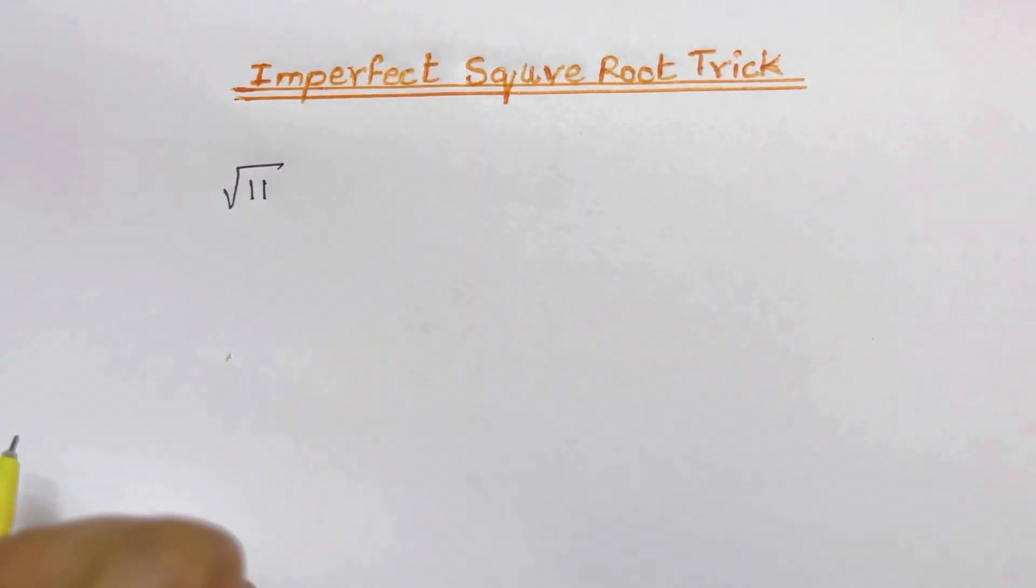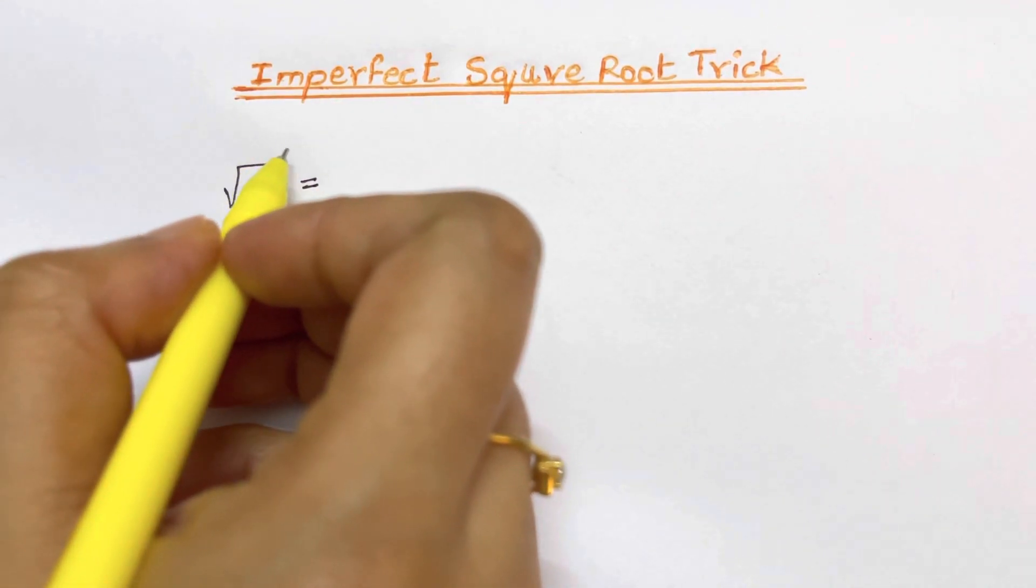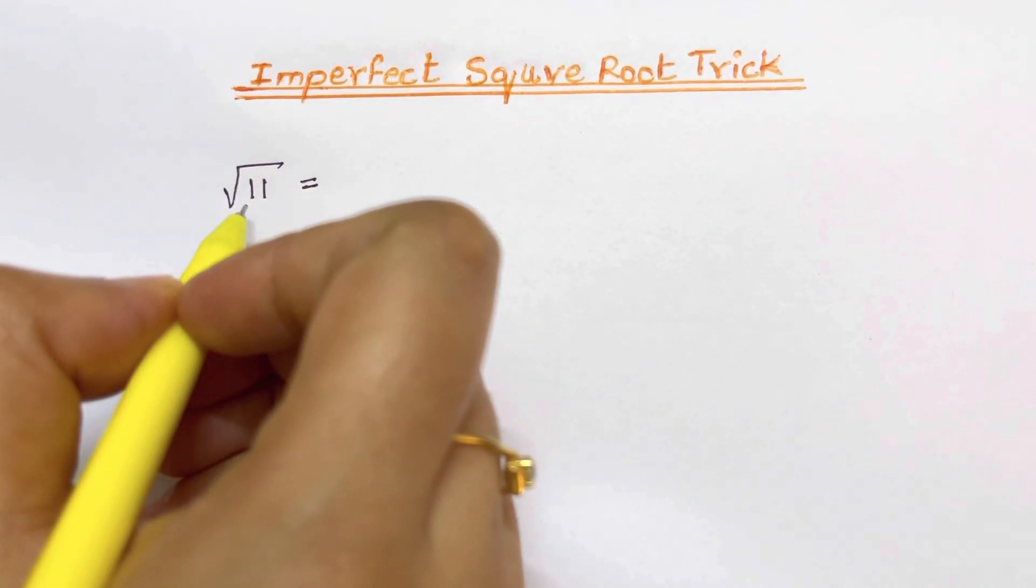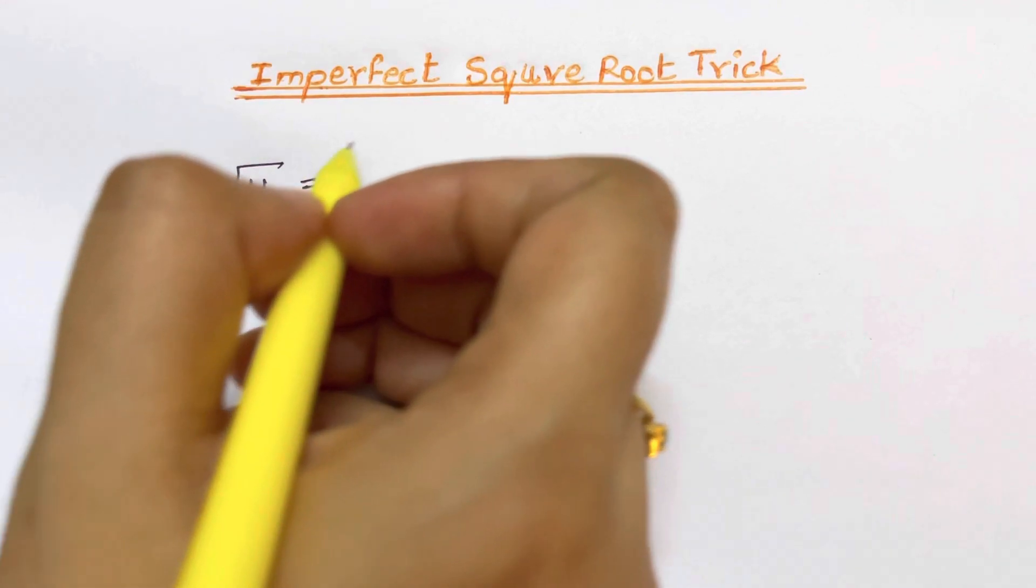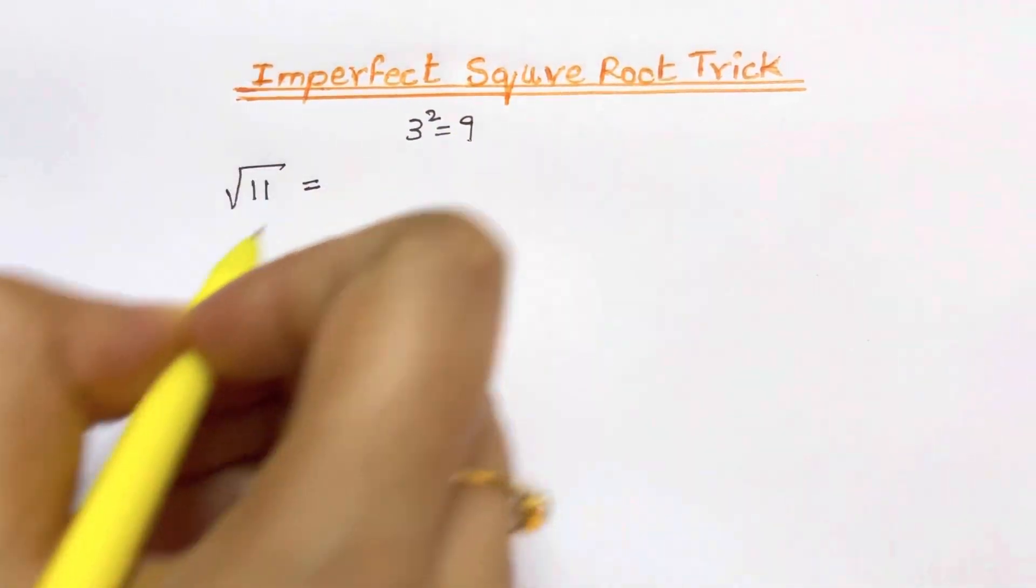Now for square root of 11. 11 is an imperfect number. Now what do we do? We choose the number which is the perfect square nearest to 11. So perfect square nearest to 11 is just 9. So that gives you 3 squared is 9.